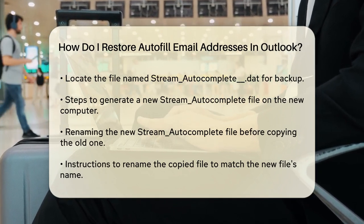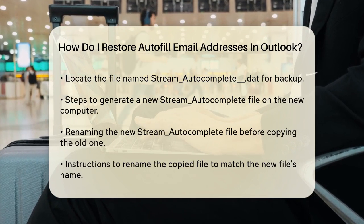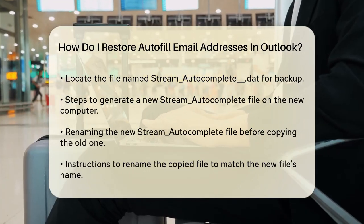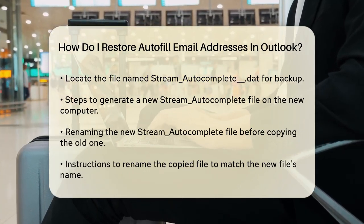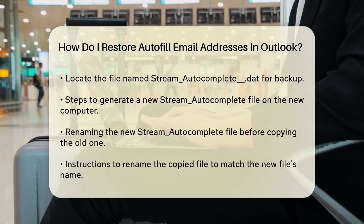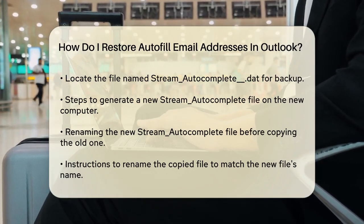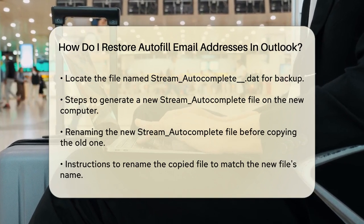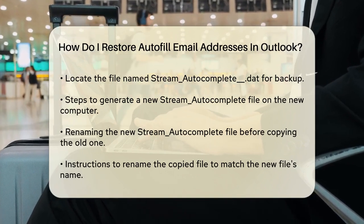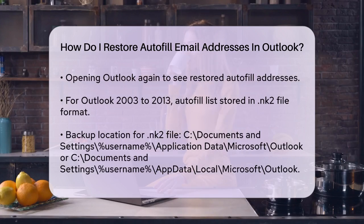To restore this file on your new computer, start by loading Outlook 2016 and sending a few emails to generate a new streamautocomplete file. Close Outlook, then go back to the RoamCache folder on your new computer. You'll see a new streamautocomplete file there. Rename the new file to something else, and then copy the original streamautocomplete file from your old computer into this folder.